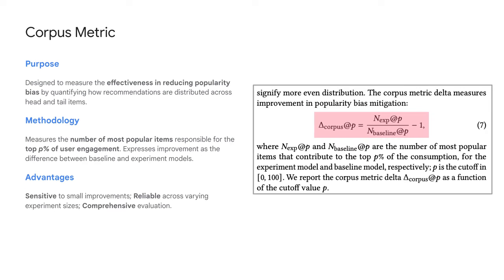We also proposed a new corpus metric. The high level idea is to measure the number of the most popular items that are responsible for the top percentages of user engagement. Compared to existing metrics, this new corpus metric is sensitive to small improvements, reliable across different experiment sizes, and provides a comprehensive evaluation of the situation.